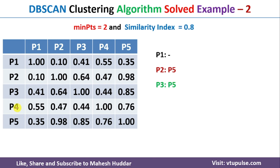Coming back to the next point, P4. Apart from P4 itself (which is 1.0), we do not have any other similarity index greater than 0.8. So for P4, there are no similar points apart from P4 itself.